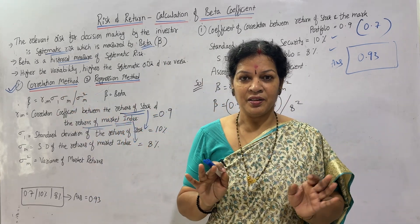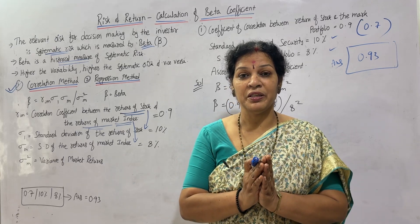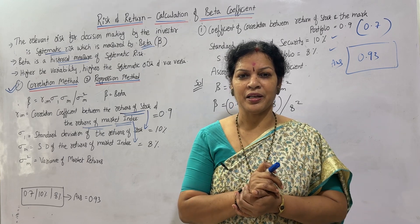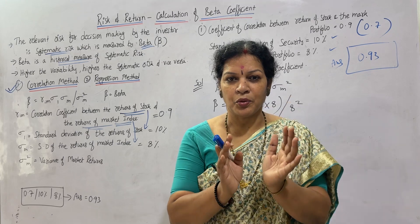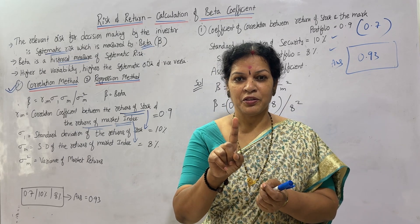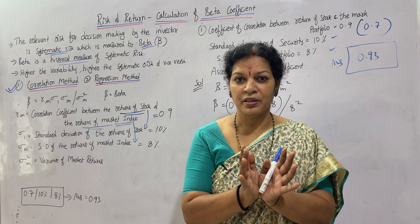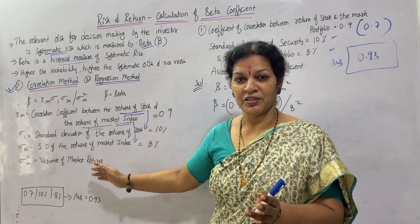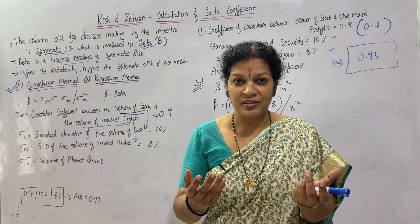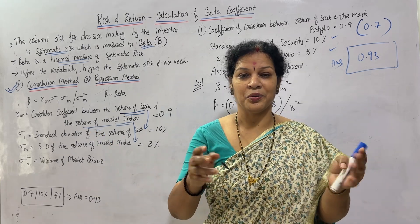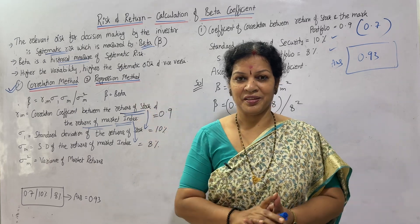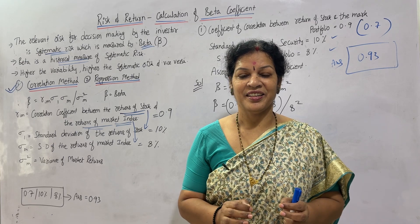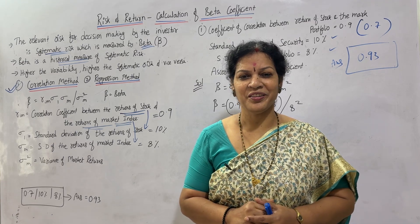That's all about the correlation method. Remember: only two types of risk are there — measurable and unmeasurable. Unmeasurable we can't do anything about; measurable can be calculated using two methods: correlation and regression. Understand the formula, what it means and what each term represents, then go ahead. Next class, we'll focus on the regression method. Take a screenshot, and please practice more times — it will be easy for you in the examinations. Don't forget to share these videos. Good luck.